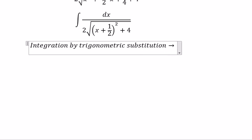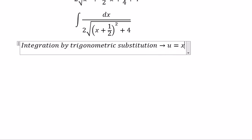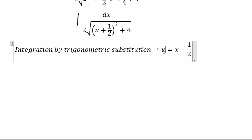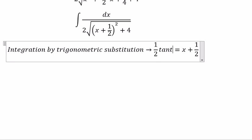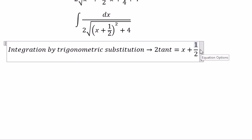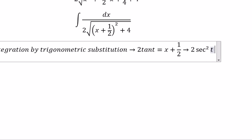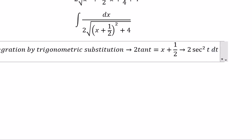So we put 2tan(t) equal to x plus 1/2. If we do first derivative on both sides, we get 2sec²(t) dt equal to dx.